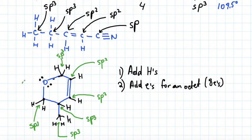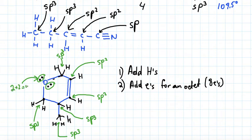Finally, let's look at the oxygen. It is connected to two attachments and has two lone pairs. Two attachments plus two lone pairs equals four — steric number is four — and its hybridization is sp3.